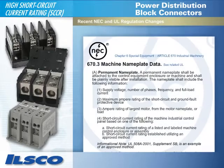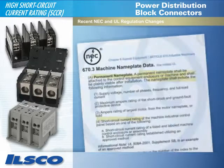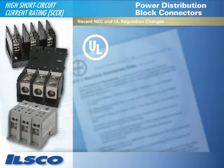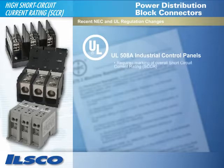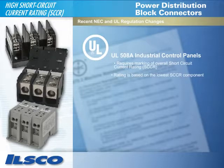Recent changes to the NEC require nameplates on industrial control panels and industrial machinery electrical panels to now include the short-circuit current rating. In response, Underwriters Laboratories modified UL-508A, its standard for the construction of industrial control panels, to require marking of the overall short-circuit current rating, or SCCR, of an industrial control panel.